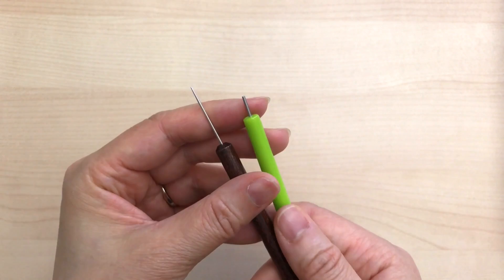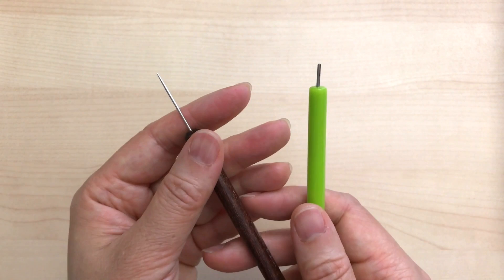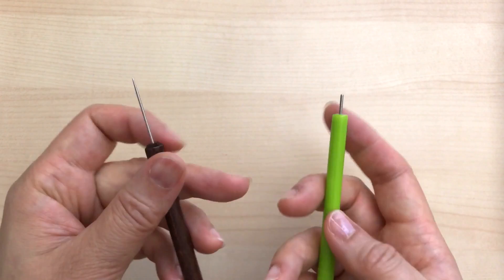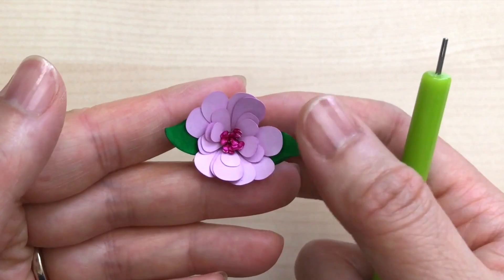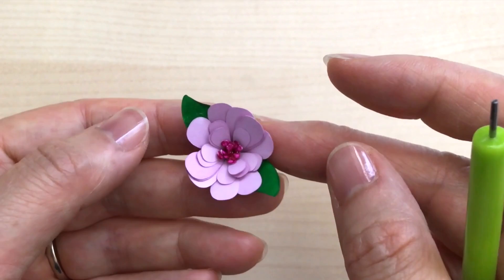Now you've seen me show how to use both of these tools and if you're trying to decide which one to get and you want my suggestion, I would actually have to say both. Why? Because I actually like to make fringed flowers. This is an example of a fringe flower that I custom cut with my digital cutter.